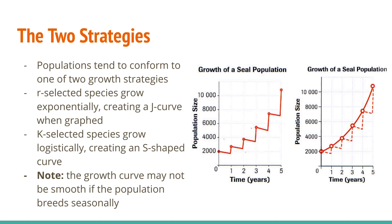k-selected is so named because it's a strategy that evens out over time. It's a bit slower, but what it allows organisms to do is match with carrying capacity. It gives more time for environmental resistances to kick in and slow down population growth without slaughtering the entire population.